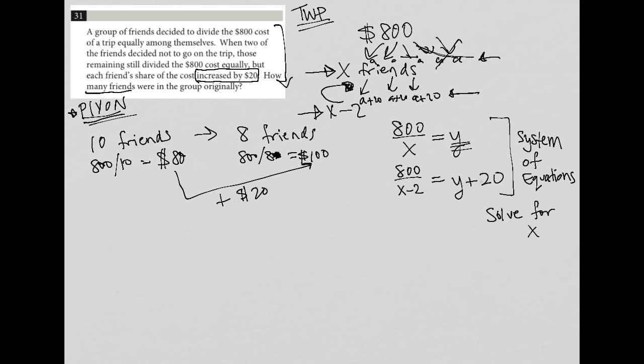So our answer here is that there were originally, because how many friends were in the group originally, there originally were 10 friends. So the answer should be 10.